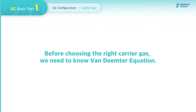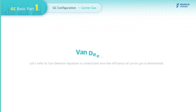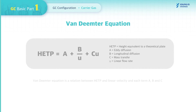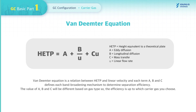Before choosing the right Carrier Gas, we need to know the Van Deemter equation. The Van Deemter equation is a relation between HETP and linear velocity, where each term A, B, and C defines each band broadening mechanism to determine separation efficiency. The values of A, B, and C will differ based on gas type, so efficiency depends on which carrier gas you choose.